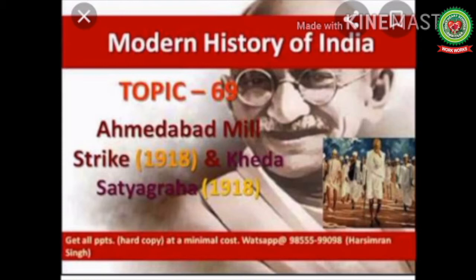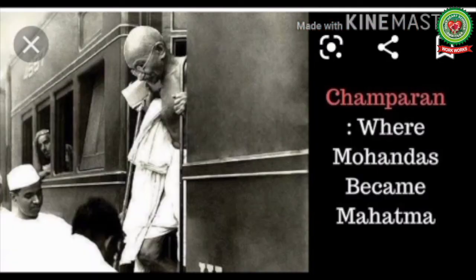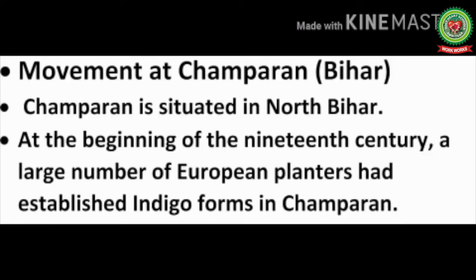We will cover the Ahmedabad mill strike of 1918, the Kheda Satyagraha, and the Champaran Satyagraha. The Champaran Satyagraha was the first ever movement started by Mahatma Gandhi on Indian soil — it was the place from where Mohandas Karamchand Gandhi became Mahatma.